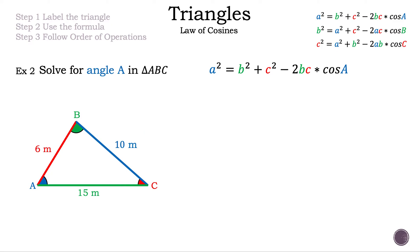Let's move on to example 2: solve for angle A in triangle ABC. We again use the formula A² = B² + C² − 2BC·cos(A), choosing it because we're solving for angle A and want the A's on the outside. The image gives us: 6 meters for side C, 10 meters for side A, and 15 meters for side B — an SSS (side-side-side) triangle. Substituting: 10² = 15² + 6² − 2 × 15 × 6 × cos(A).